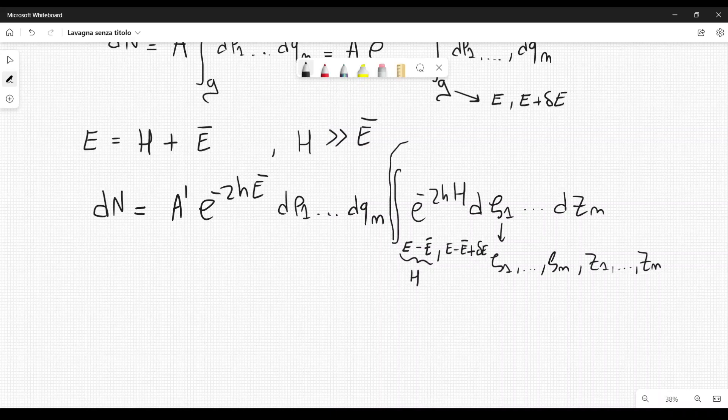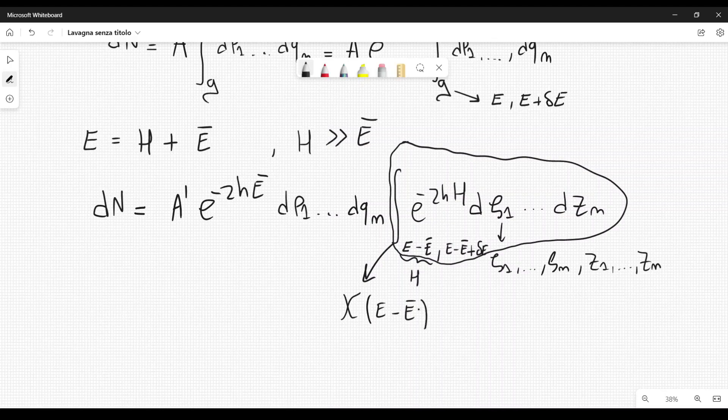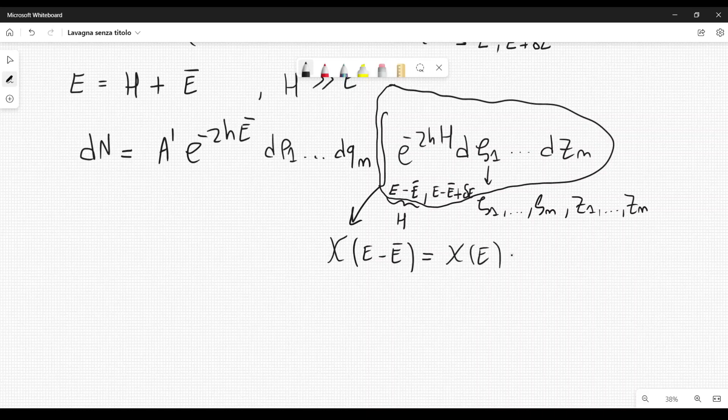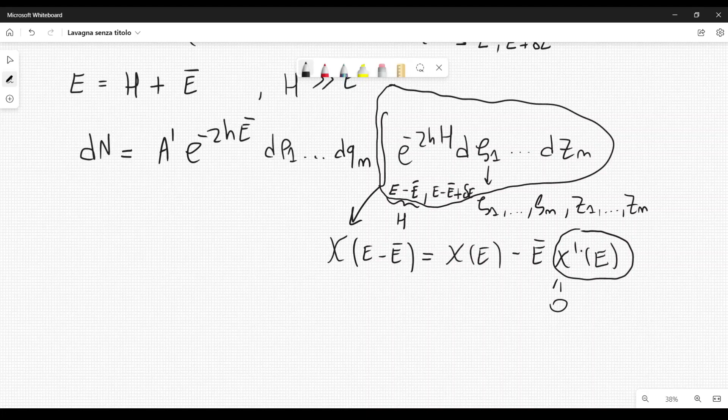And Einstein defined this function here as some function chi, which depends on the difference between E and E bar. The integral, of course, depends on this difference. Now I can expand this in a Taylor series because E bar is very small. So this is approximately equal to chi of E minus E bar times chi prime of E. This is exactly what Einstein did. And then in order for chi of E minus E bar to be a function only of the energy E, we can set chi prime of E equal to zero because E bar is very small.